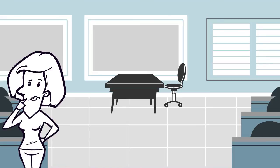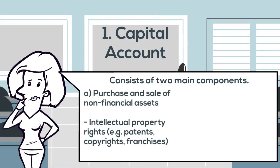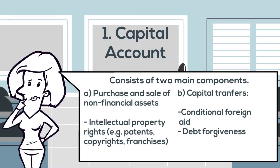The capital account consists of two main components. The first is the purchase and selling of non-financial assets, including intellectual property rights such as patents, copyrights and franchises. The second component is capital transfers, which includes things like debt forgiveness and conditional foreign aid. Unlike the unconditional foreign aid found on the current account, this aid is given to specific developing countries to be used for investment purposes such as building a new school.